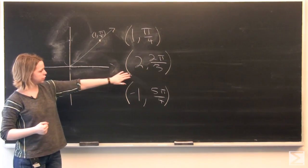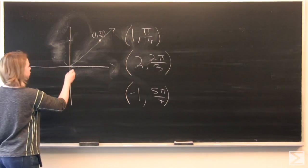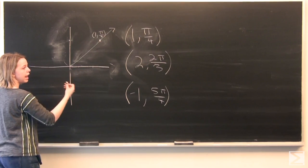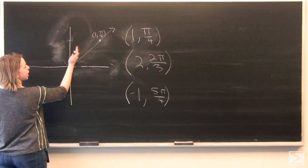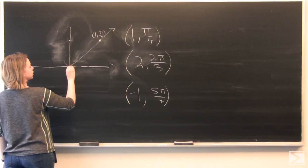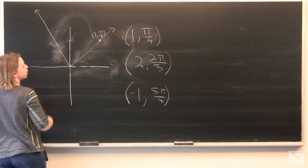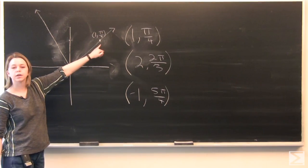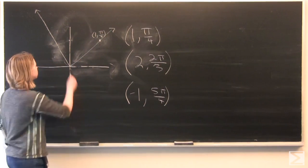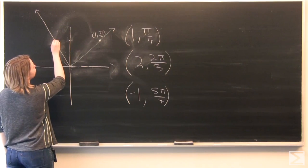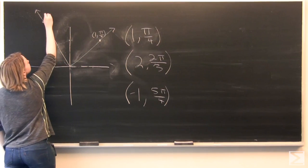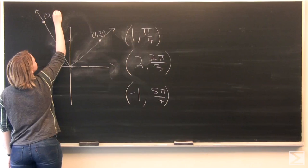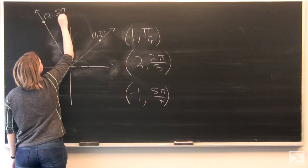Now let's do 2, 2 pi over 3. So our angle, we're moving 2 pi over 3 radians from our origin. Our ray is going to be about here. And this time instead of moving 1 unit, we're moving 2 from the origin. So 1 will be about here, making this 2, 2 pi over 3.